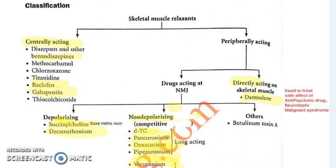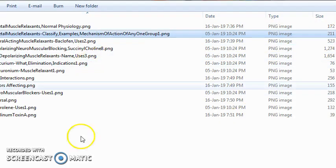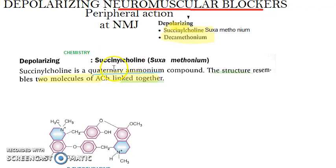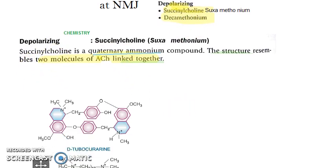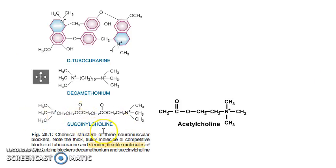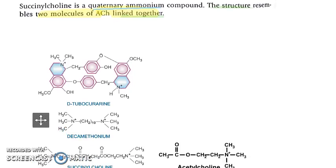Succinylcholine is a depolarizing skeletal muscle relaxant that works peripherally on the neuromuscular junction. It is also called suxamethonium. Regarding the chemistry of succinylcholine: remember the other example of a depolarizing neuromuscular blocker is decamethonium. Succinylcholine has a slender structure — it is a quaternary ammonium compound, slender and flexible, and it looks similar to two acetylcholines joined together. This is the chemistry of succinylcholine.